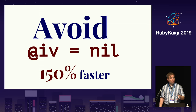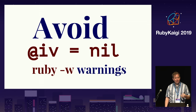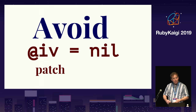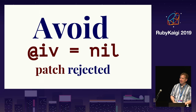The reason this optimization is controversial is that accessing an uninitialized instance variable generates a warning in verbose mode. This verbose mode warning slows down all instance variable access even if all instance variables are initialized. I submitted a patch to speed up all instance variable access by about 10% by removing this warning if verbose mode was not enabled at compile time, but unfortunately that was not considered enough of an improvement to justify the backwards compatibility breakage.